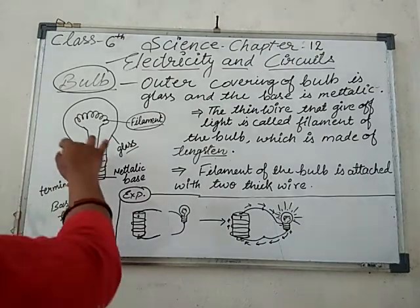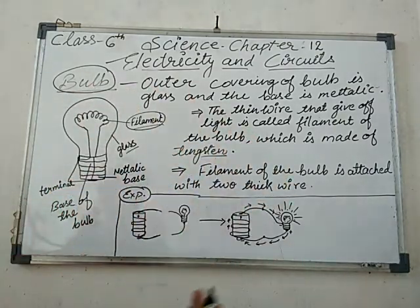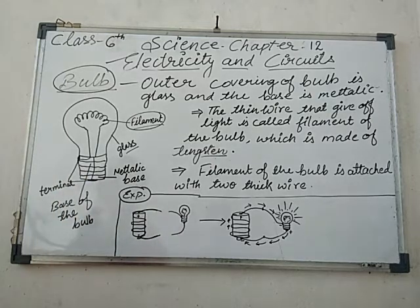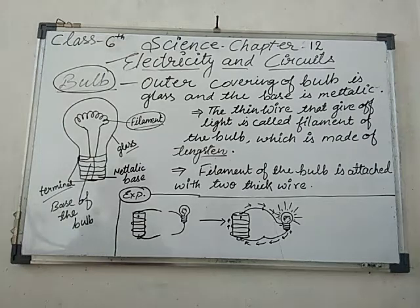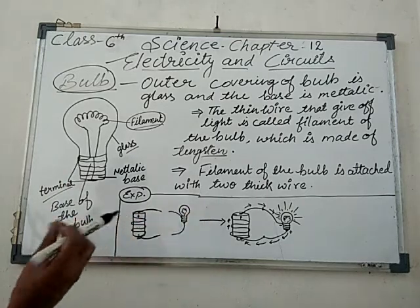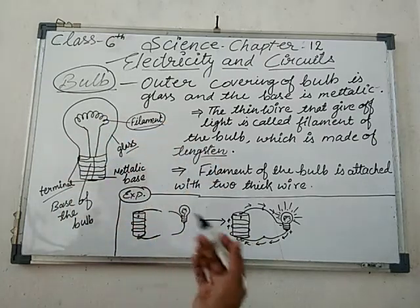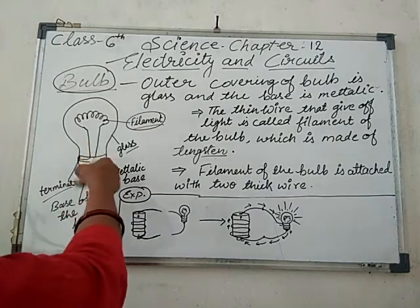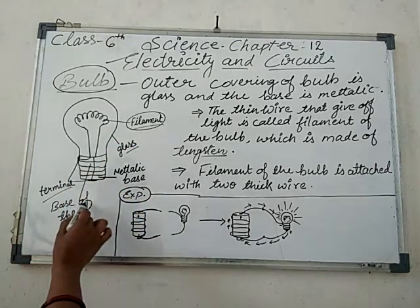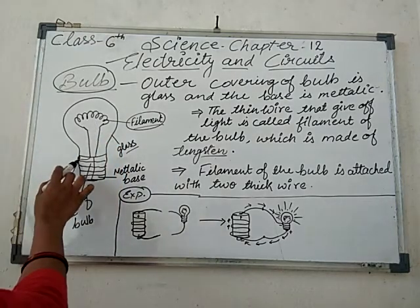The filament of the bulb is attached with two thick wires. Just like a cell, there are two terminals on the bulb also — a positive terminal as well as a negative terminal. These two terminals are present in the bulb and are arranged in such a manner that they never touch each other. This is also the terminal, and this is the glass, this is the metallic base — that is called the base of the bulb.